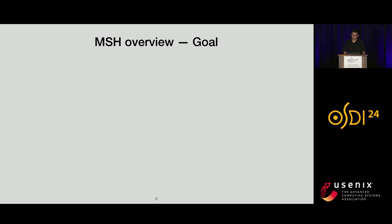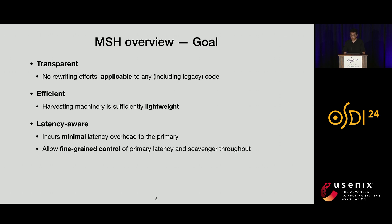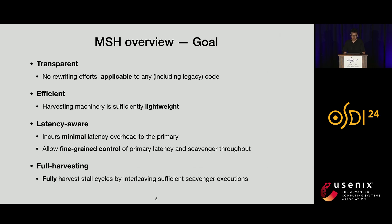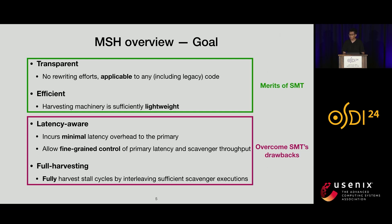MSH has four goals. First, it should be transparent, requiring no rewriting efforts and applicable to any code including latency-critical code. Second, it should be efficient, meaning the harvesting machinery should be lightweight enough that the benefit of harvesting outweighs the cost. Third, it should be latency-aware, incurring minimal and configurable latency overhead while allowing fine-grained control of the trade-off between primary latency and scavenger throughput. Lastly, it should fully harvest stall cycles by always interleaving sufficient scavenger executions.